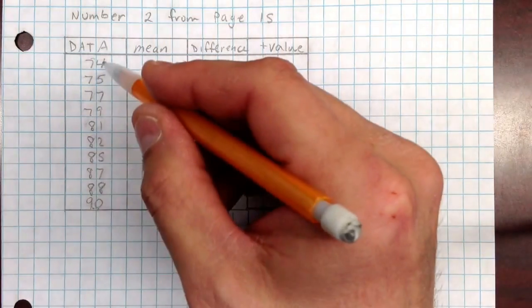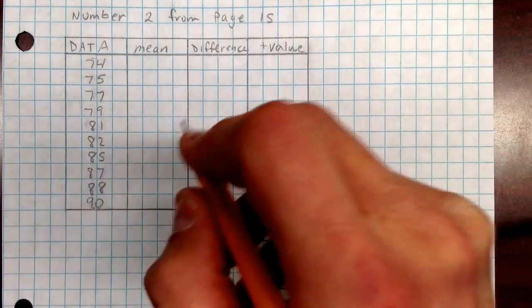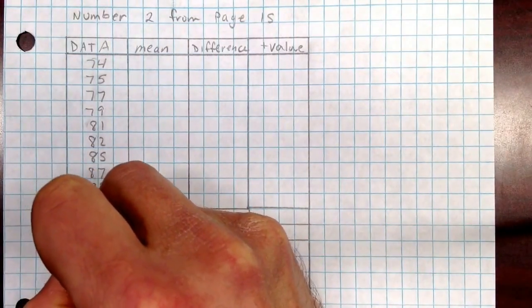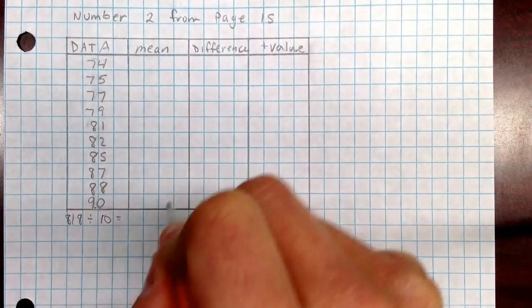So let's find the mean first. So add these numbers all up and you should get 818 for that and then divide by how many numbers there are, in this case there's 10 of them and that equals 81.8.